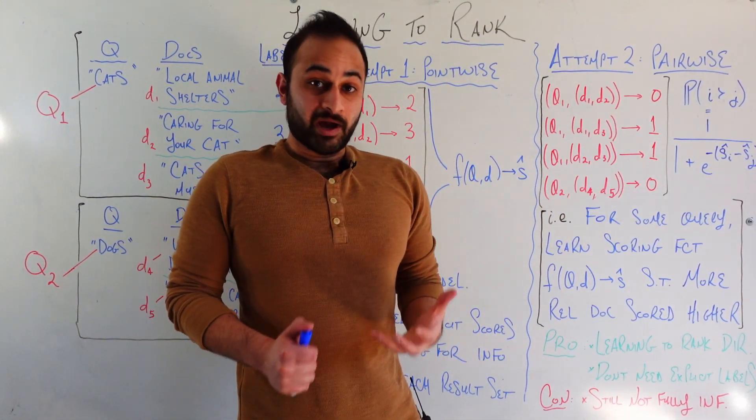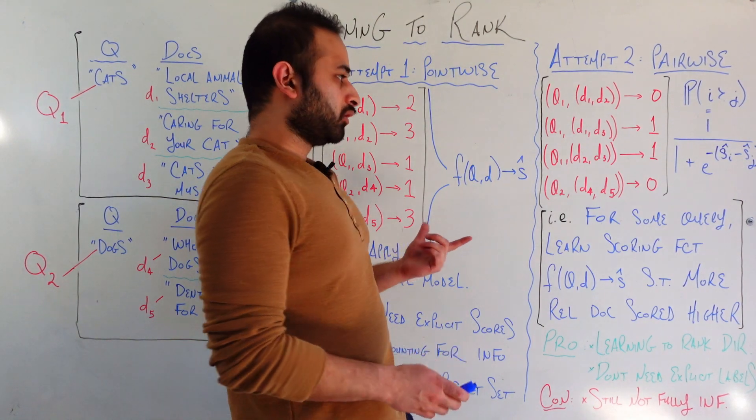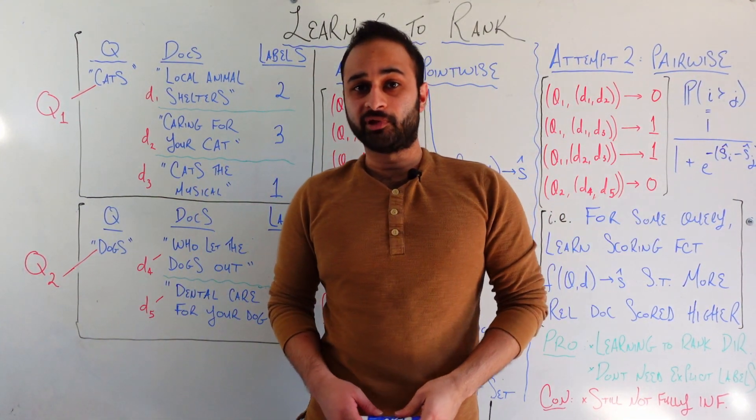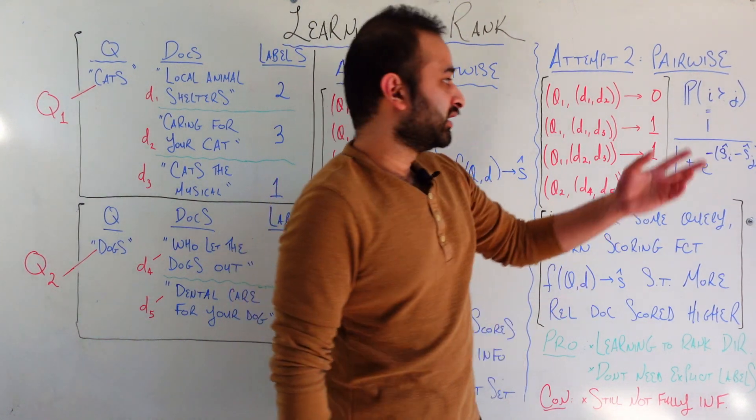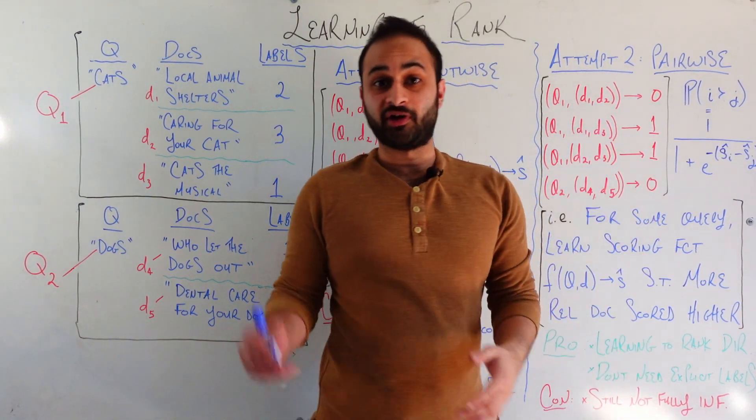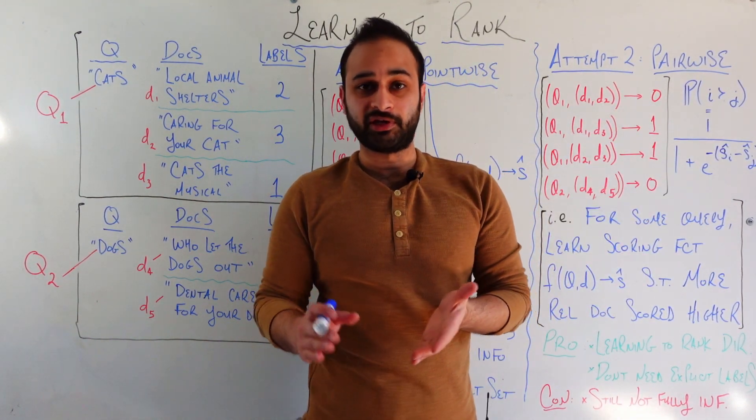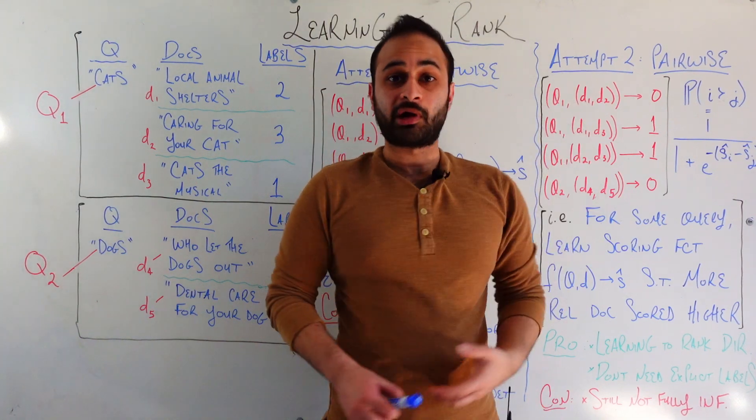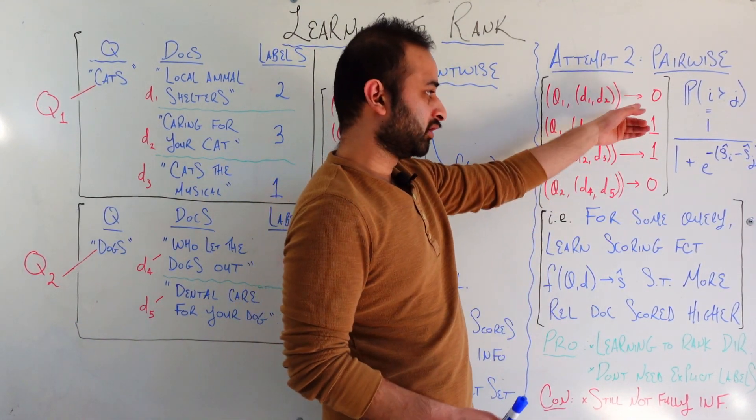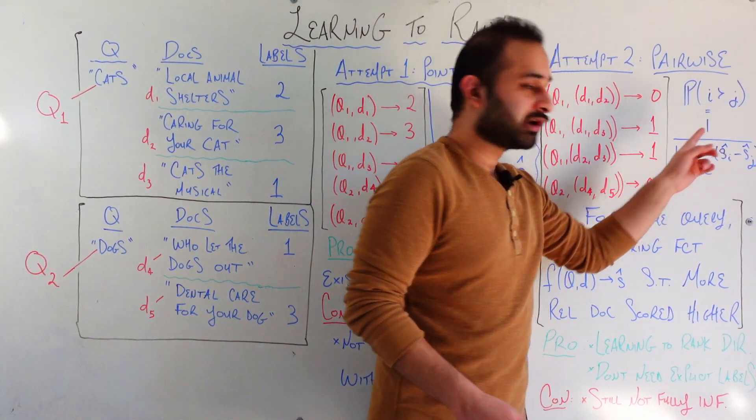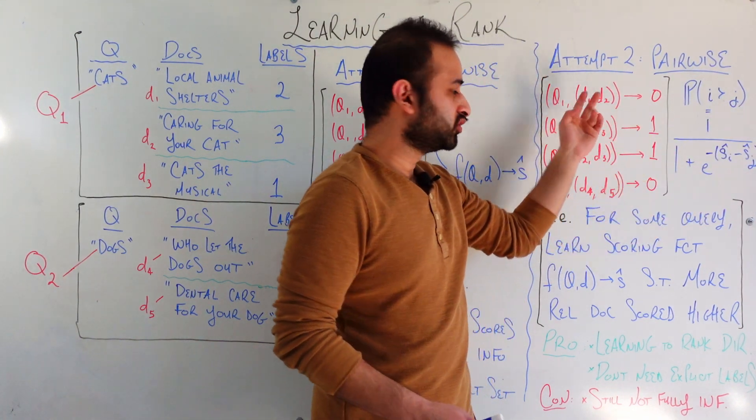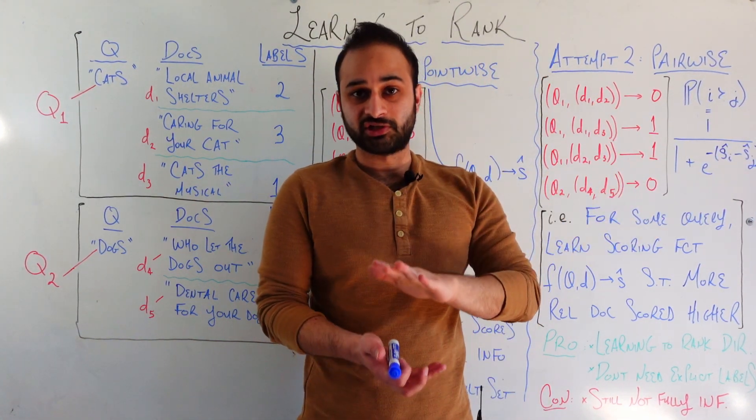But instead of treating these scores independently as we were doing in the point-wise model, we are going to be directly trying to optimize or match this probability. To be explicit here, for example, let's say that we're looking at document 1 and document 2. We know that the label here is 0, so this probability should be very small because we want the probability that document 1 is more relevant to document 2 to be very small because in honesty, it's not. It has a label of 0.